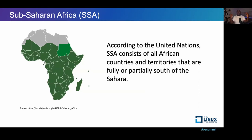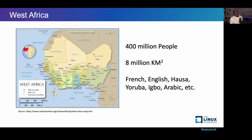Then we have the part of Africa that is below the Sahara: Sub-Saharan Africa. According to the United Nations, most countries in SSA are below the Sahara desert, running down to the Cape of Good Hope in South Africa. Part of Sub-Saharan Africa is West Africa, which is where I'm from — Nigeria specifically — with more than 400 ethnic groups and several languages. I personally speak English, Hausa, Yoruba, a bit of Arabic, and the French I learned in school.